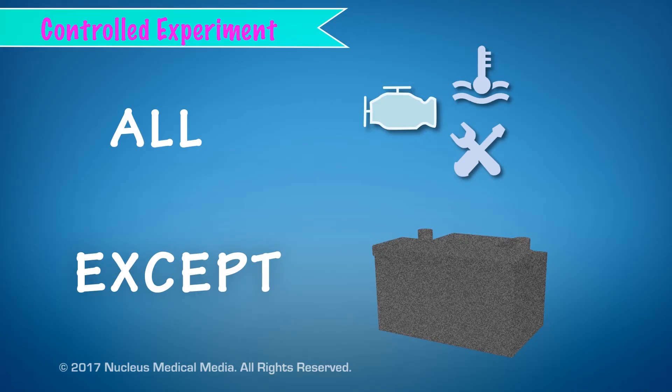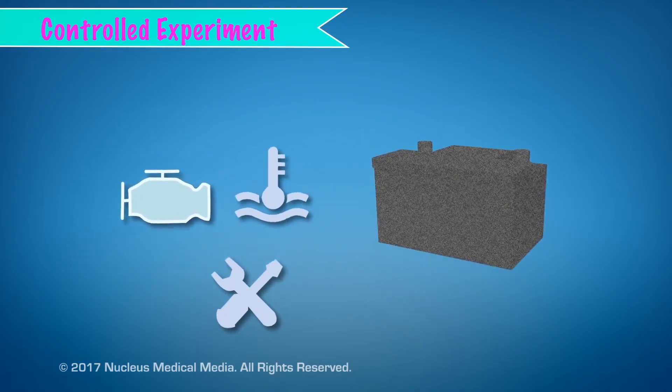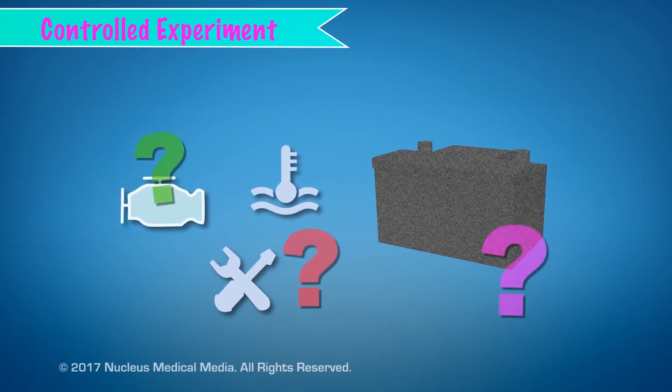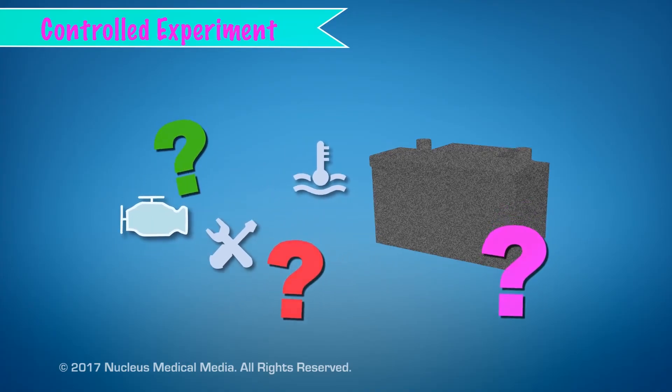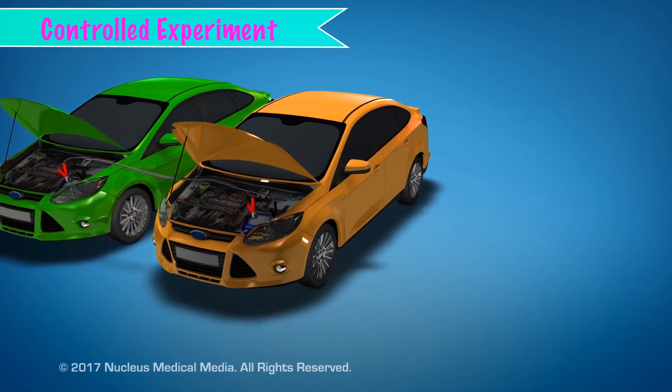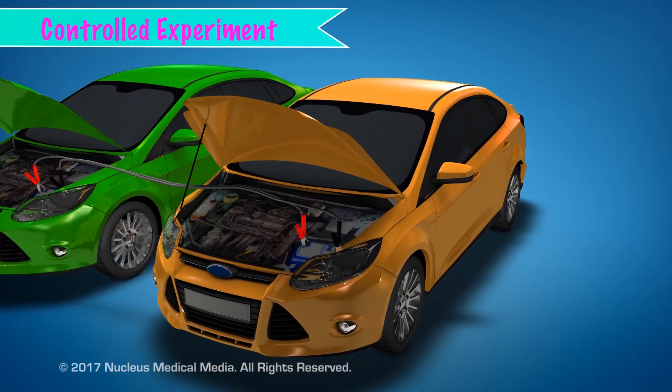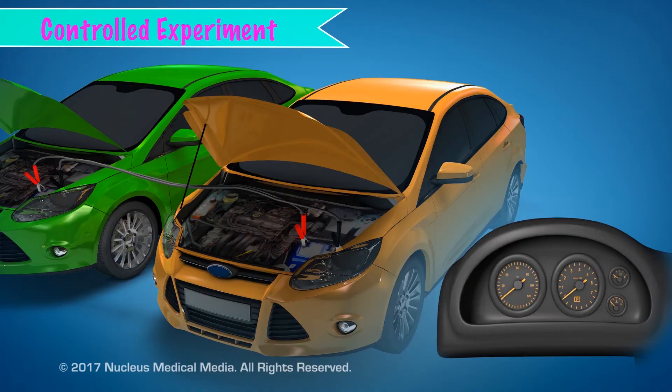Why must you change only one variable? Because if you change or affect more than one, you won't know which variable caused the car to start. You can carry out your controlled experiment by attaching jumper cables from a charged battery to the battery in your car to see if the car then starts.